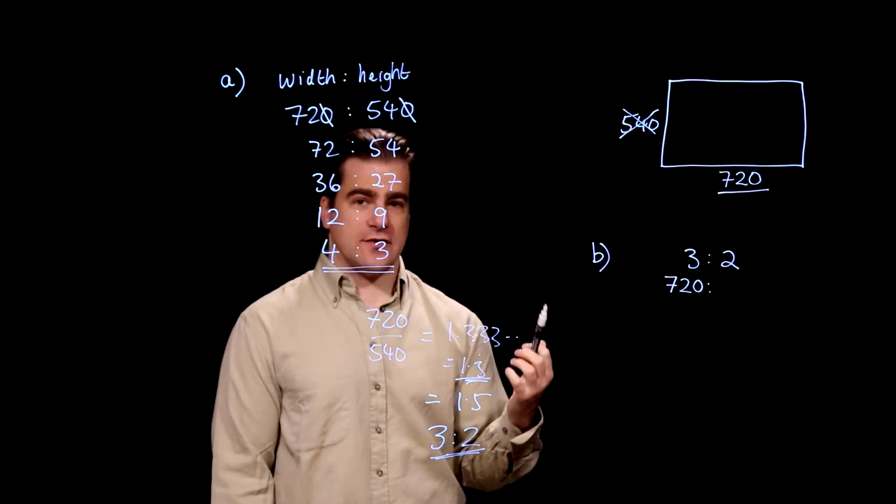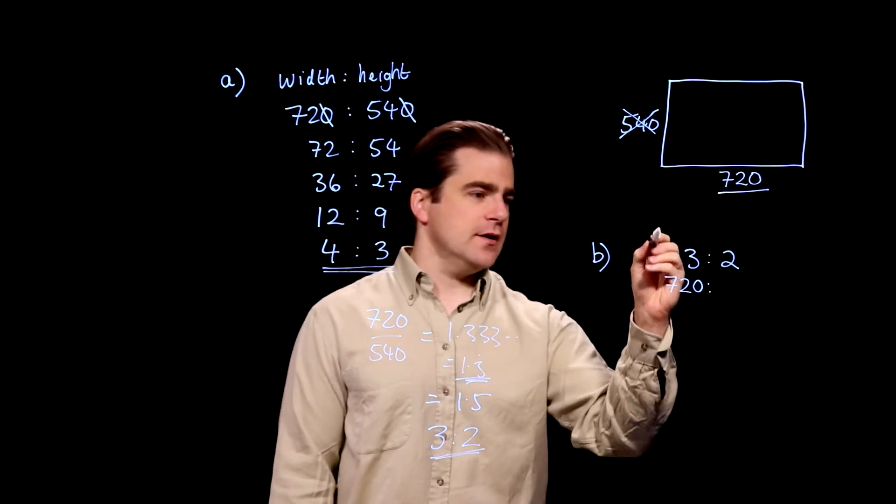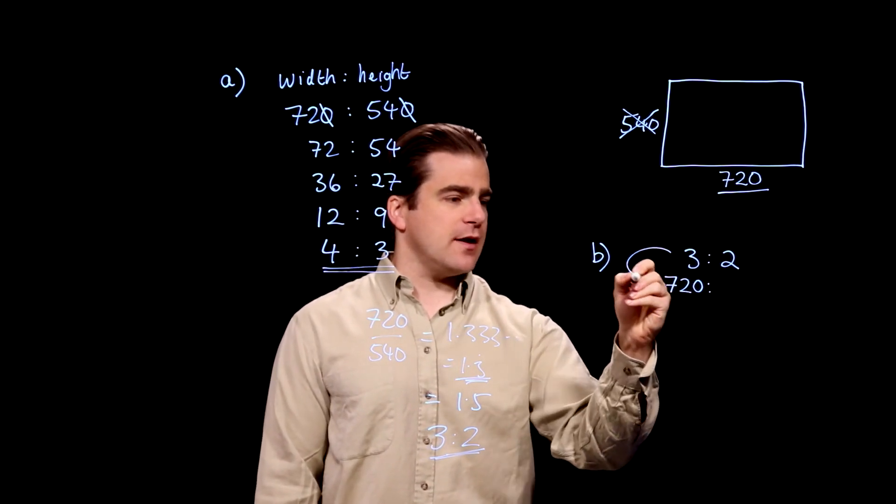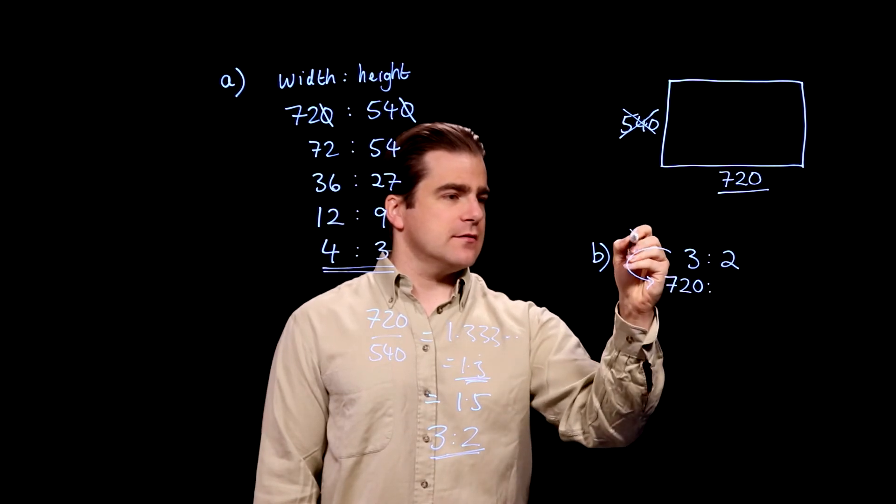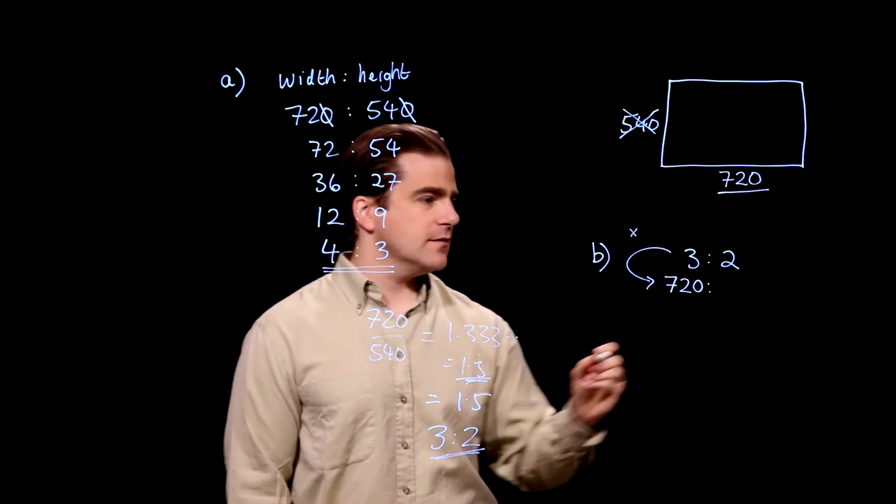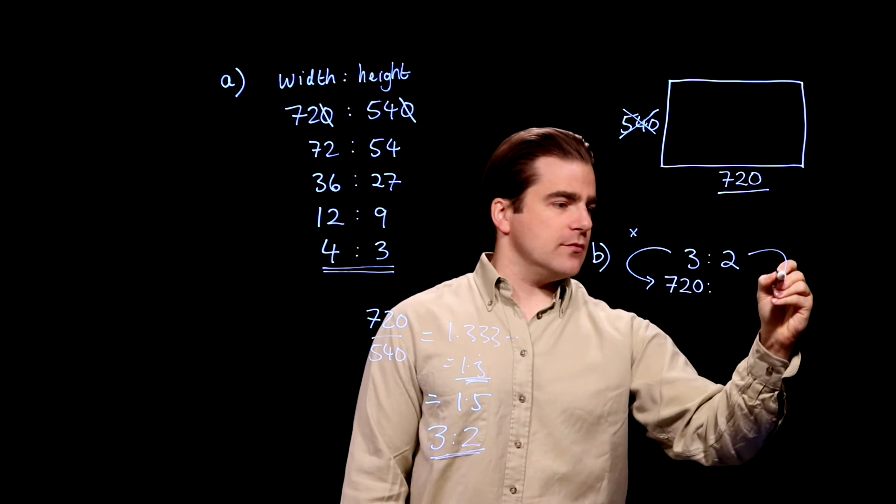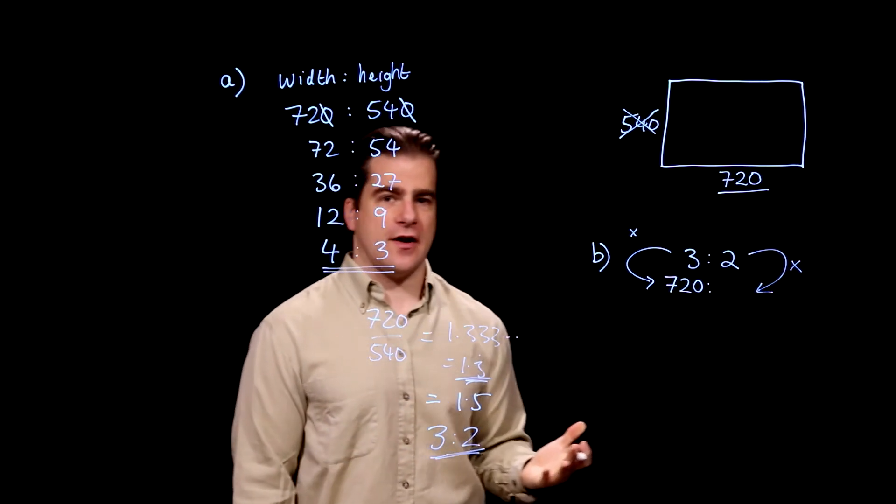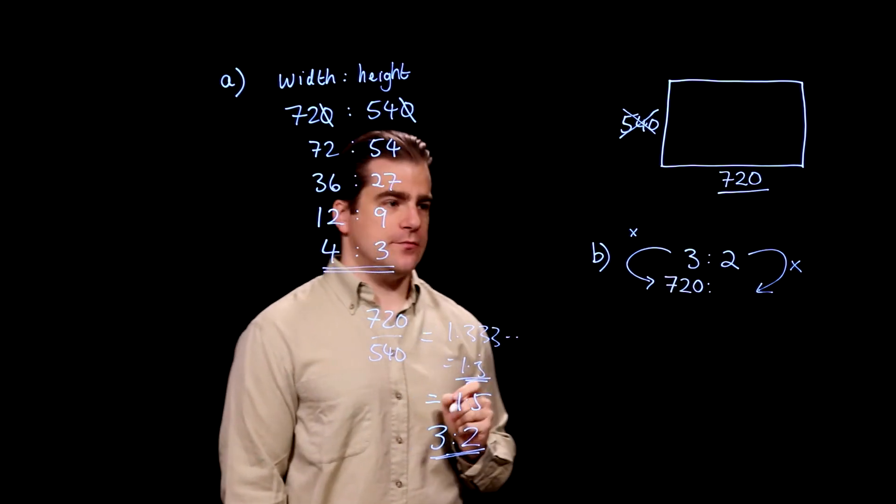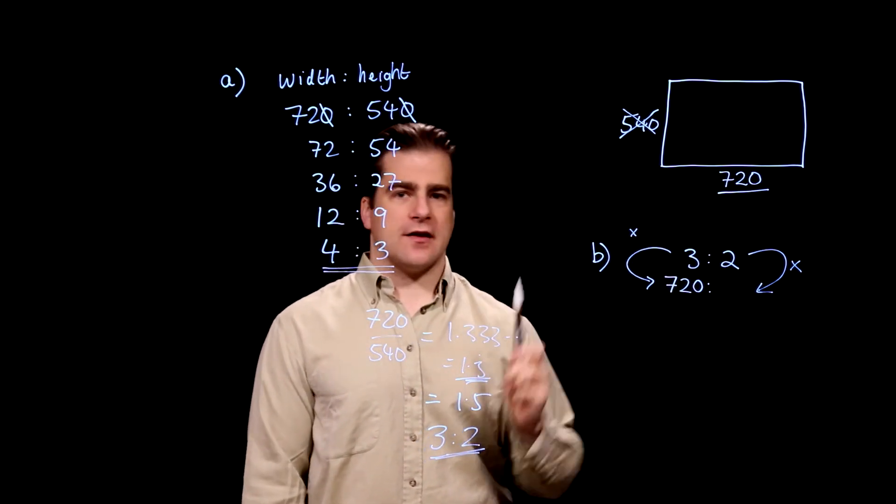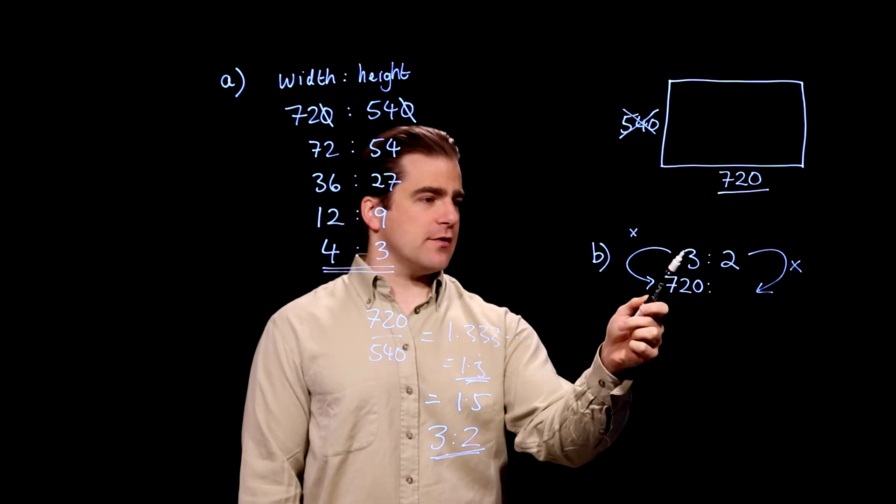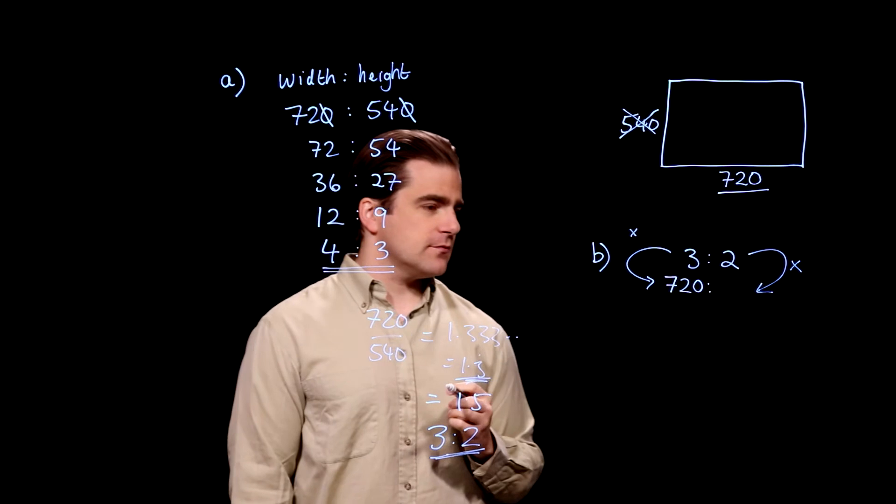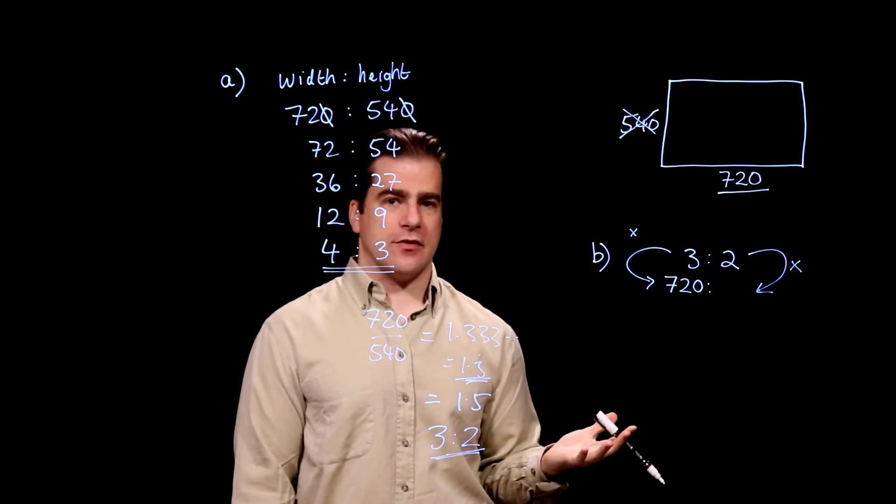It's a classic ratio scaling problem, which means that whatever that 3 has been multiplied by to get 720, we have to multiply the 2 by the same scaling factor, and that will be our answer. So let's find the scaling factor. What do we have to multiply 3 by to get 720? Well, in other words, what's 720 divided by 3?